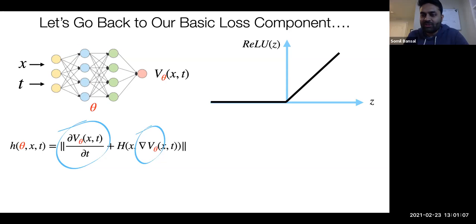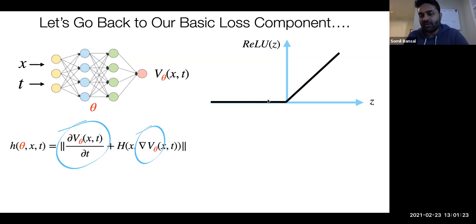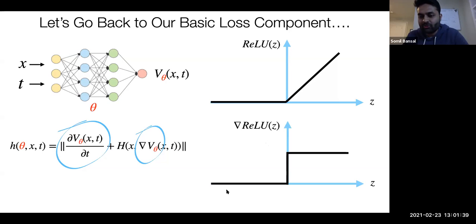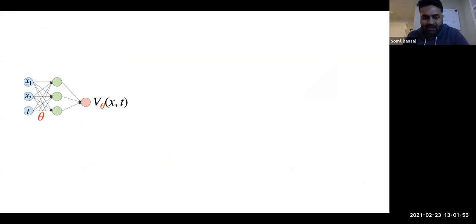One popular activation function in today's neural networks is ReLU. What ReLU does is output the input when it's positive and zero when it's negative. The gradient of a ReLU function is a piecewise constant: it's zero in the negative regime and one in the positive regime. In a simple example with two states x1, x2, and time as inputs, and a one-layer network with three neurons, the gradient of the value function is constant within each region defined by the neurons' decision boundaries.